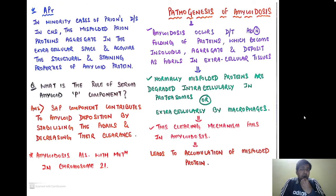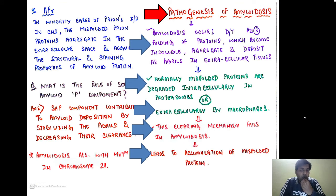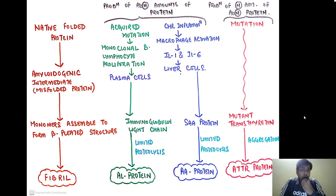In the pathogenesis of amyloidosis: abnormal folding of proteins renders them insoluble, they aggregate, and deposit as fibrils in the extracellular tissues. Normally, misfolded proteins are degraded intracellularly in proteasomes or extracellularly by macrophages. In amyloidosis, this clearing mechanism fails, leading to accumulation of misfolded proteins. This degradation process is discussed in Chapter 1 — cell as a unit of health and disease.